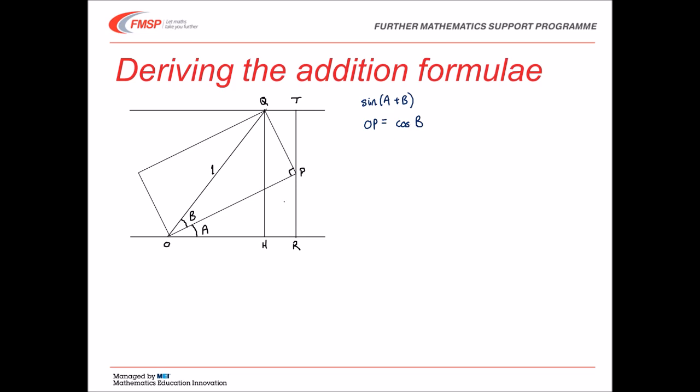Now look at triangle OPR. We've seen that length OP is equal to cos B, and therefore RP is going to be cos B, the hypotenuse, multiplied by sine A. Now look back at triangle OPQ. We want to find the length PQ and that is equal to 1 sin B.